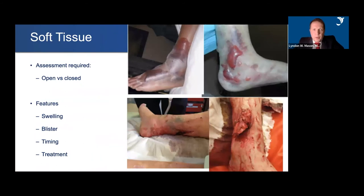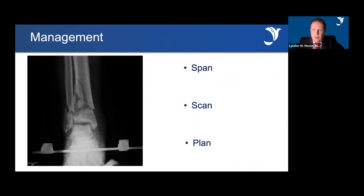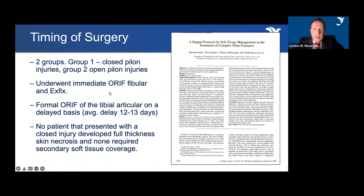Soft tissue assessment is required — is it open or closed? Assess swelling and blistering, as this will dictate your timing of treatment. Spanning, scanning, and planning is not for all pilon fractures, but for high-velocity injuries this is the best approach. This came from the Sirkin paper: in group one, looking at closed pilon injuries, if they underwent immediate fibula fixation and external fixation they noted no full-thickness skin necrosis, and those that acquired secondary soft tissue problems had coverage. This was a game changer — it established that staged treatment for high-velocity pilon injuries should be the standard.